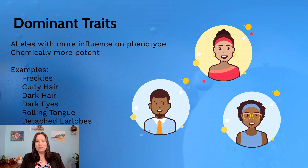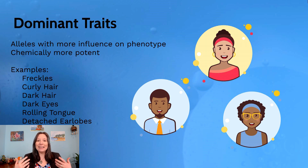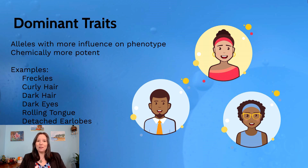Some common examples of dominant alleles include freckles, and curly hair — if you have one allele for curly hair and one for straight hair, you will more often than not have at least some curl to your hair. Other dominant alleles include dark hair, dark eyes, a dark skin complexion, being able to roll your tongue, and detached earlobes — an earlobe that dangles and hangs away from the head a little bit. These are all examples of dominant traits.